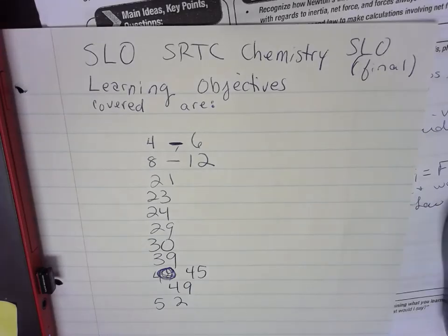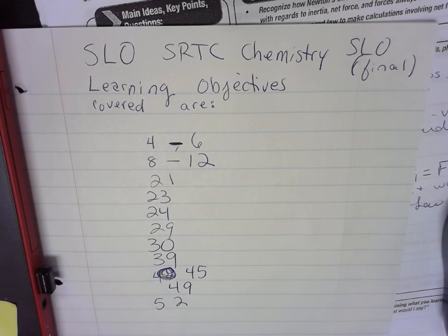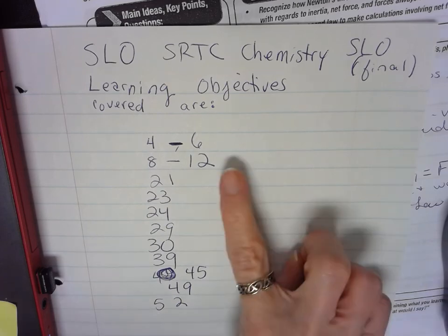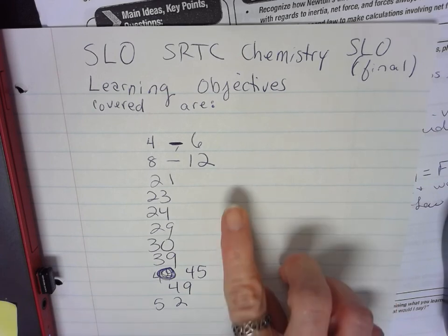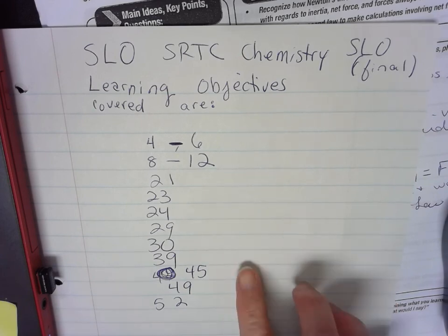These are the SLOs — student learning objectives — for the SRTC chemistry inorganic final that you will be taking. There were over 50 — I think 53 — learning objectives total. The ones listed are the ones you want to spend more time on: 4, 5, 6, 8, 9, 10, 11, 12, 21, 23, 24, 29, 30, 39, 45, 49, and 52.